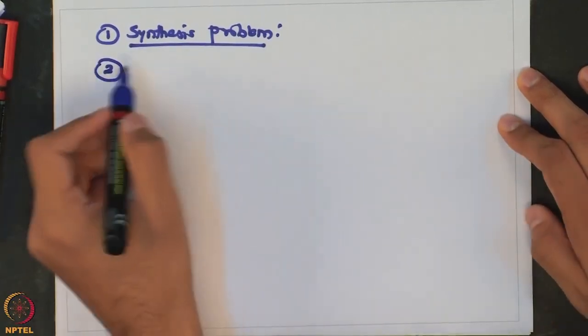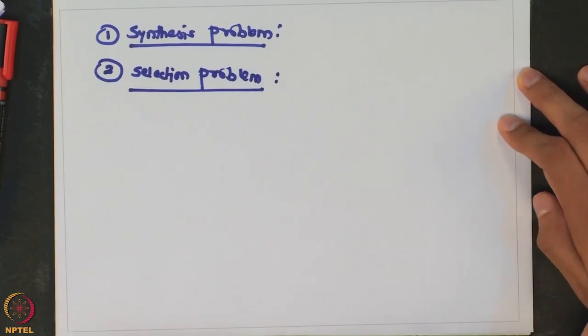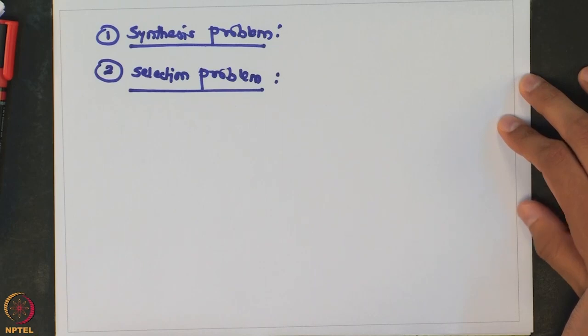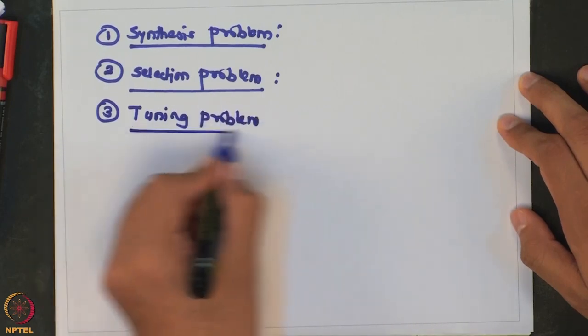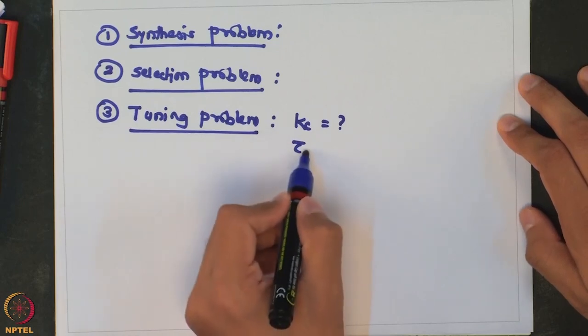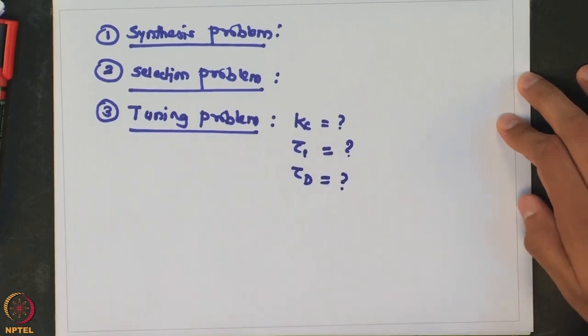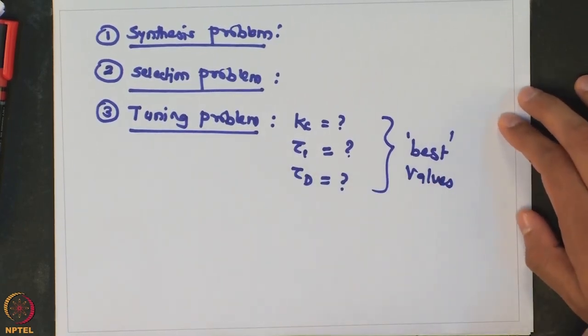Once the structure of the control system is finalized, we move on to the second problem known as the selection problem. In this problem we look at the individual control loops and try to identify, within our current context of linear controllers, whether that particular controller should be a P, PI, or PID controller. The most frequently encountered problem is known as the tuning problem: for a given PID controller, how do you select good values of the controller gain, integral time constant, and derivative constant.